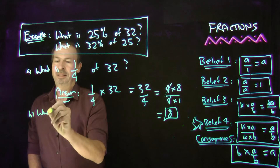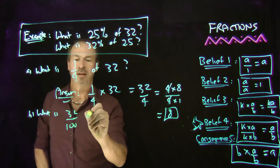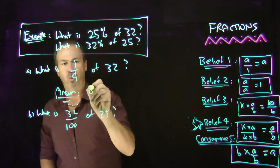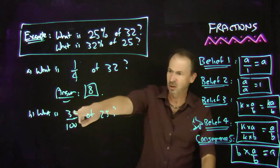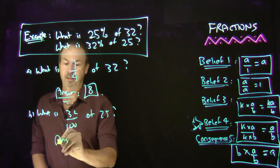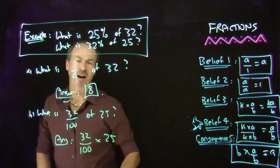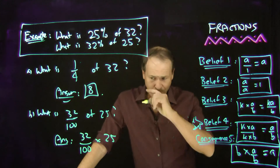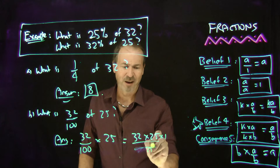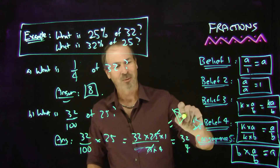Part B: what is 32% of 25? 32% is the fraction 32 per centum — 32 over 100 — of 25. Using the mechanics of fractions, that's 32 one-hundredths times 25 over 1, which gives 32 times 25 all over 100. Since 25 over 100 simplifies: 25 is 25 times 1 and 100 is 25 times 4, so I'm left with 32 over 4. That's 32 over 4, which also equals 8.